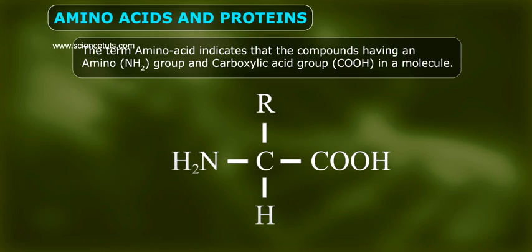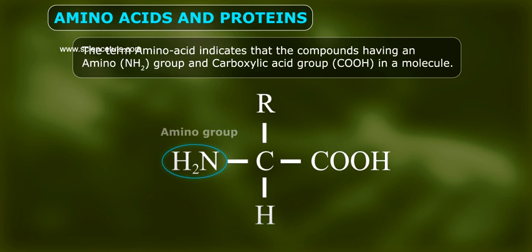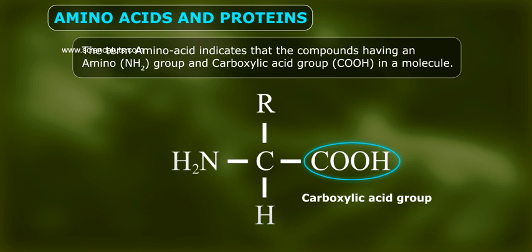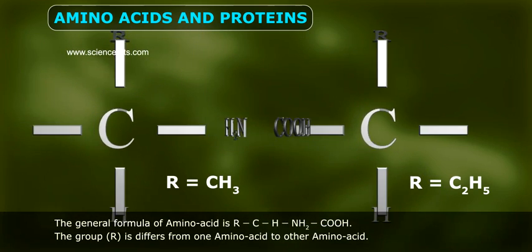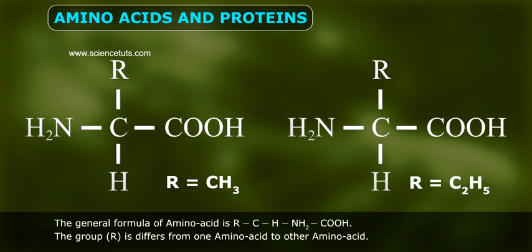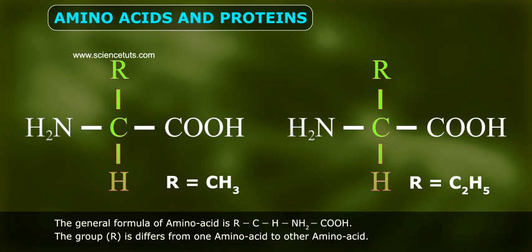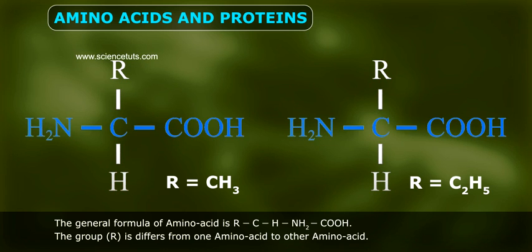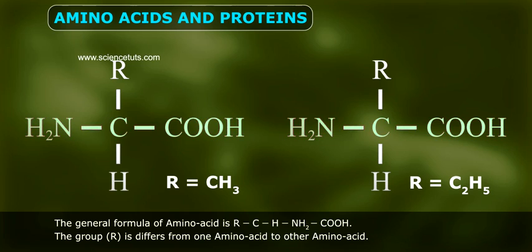The term amino acid indicates that the compounds have an amino group (NH2) and a carboxylic acid group (COOH) in a molecule. The general formula of amino acid is R-CH(NH2)-COOH. The R group differs from one amino acid to another.